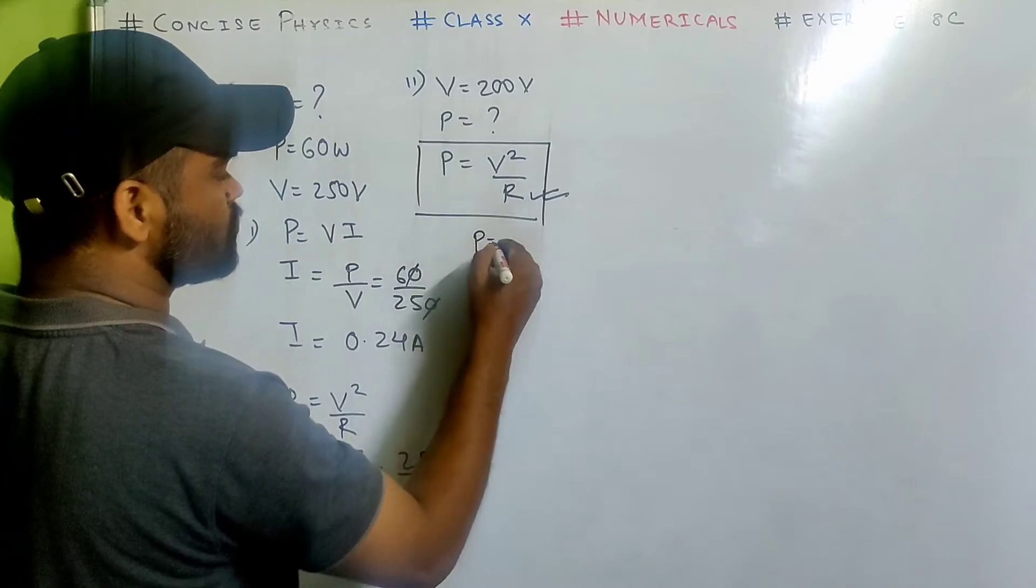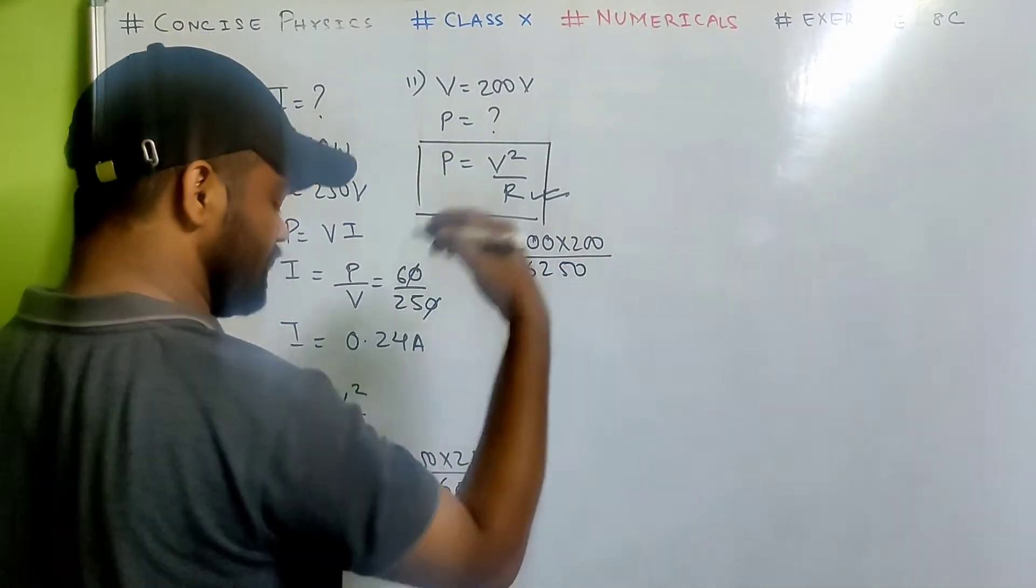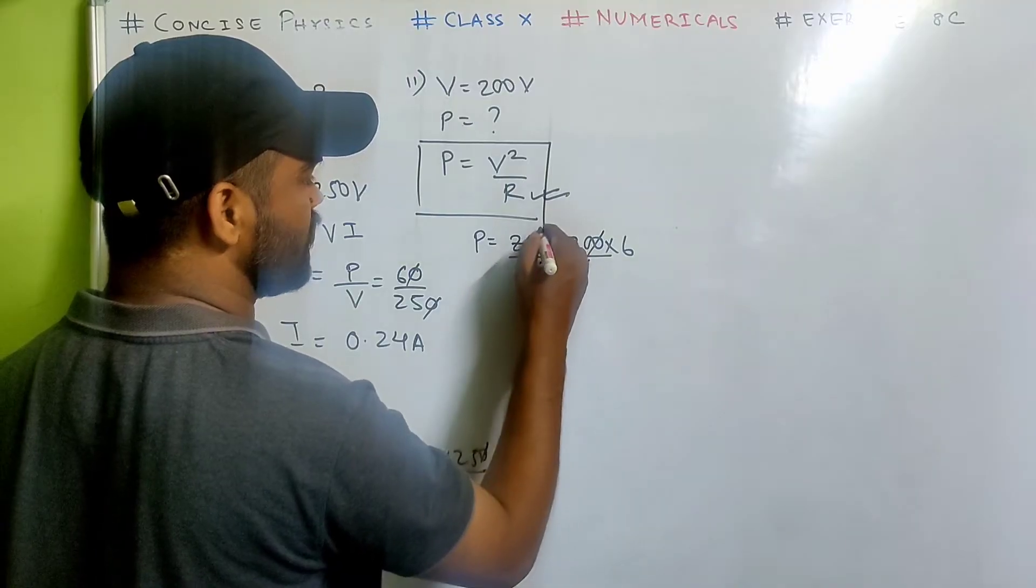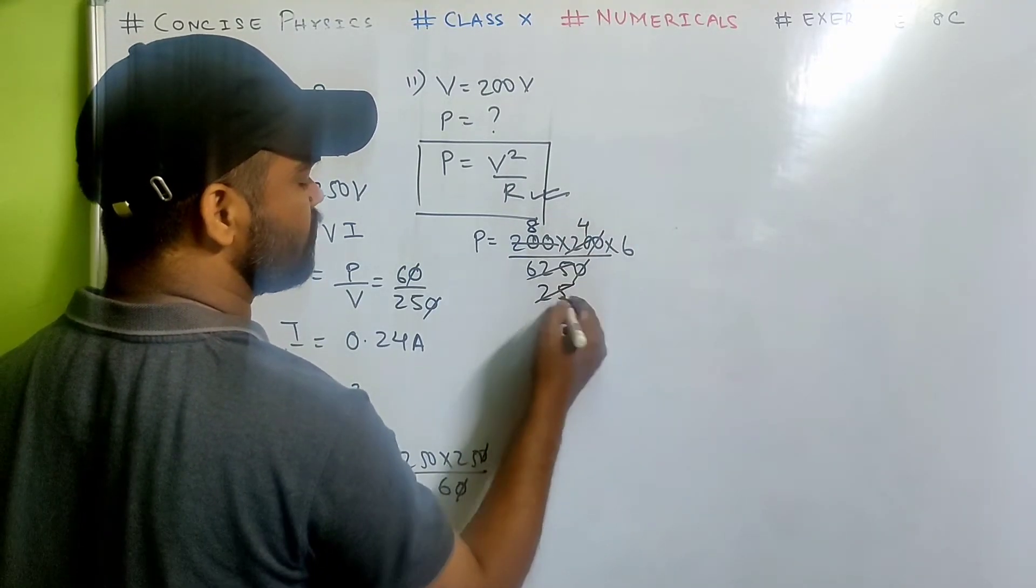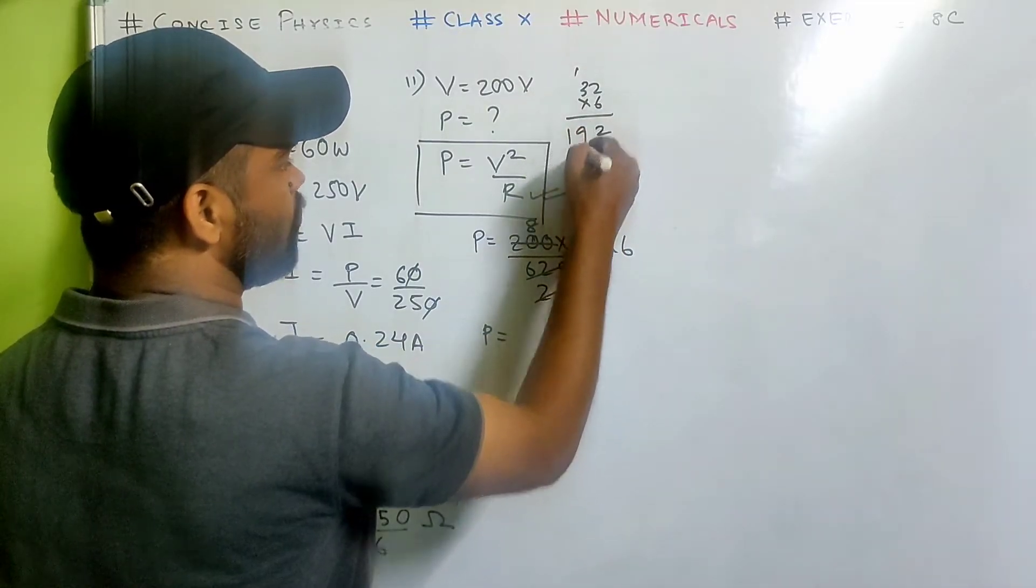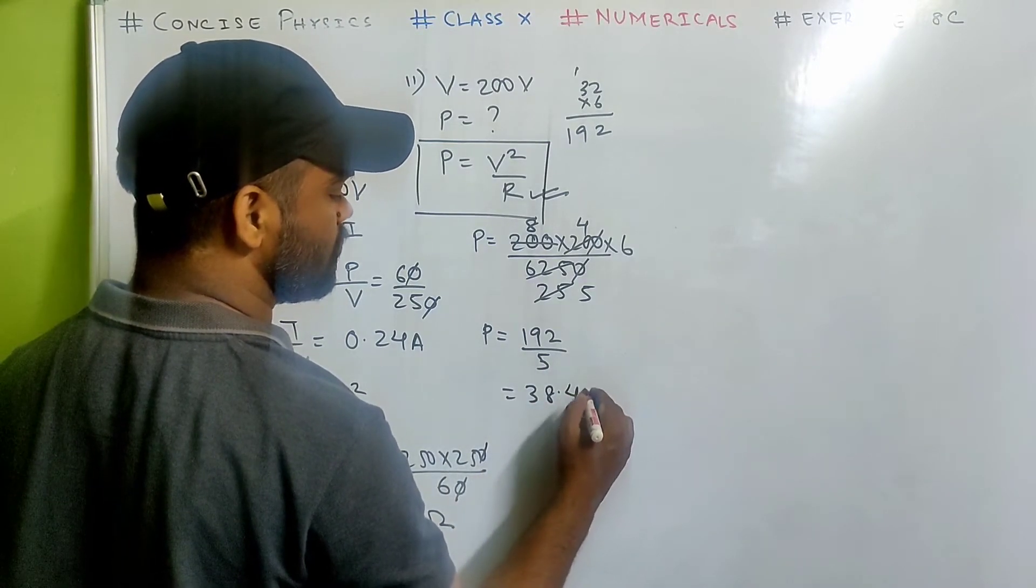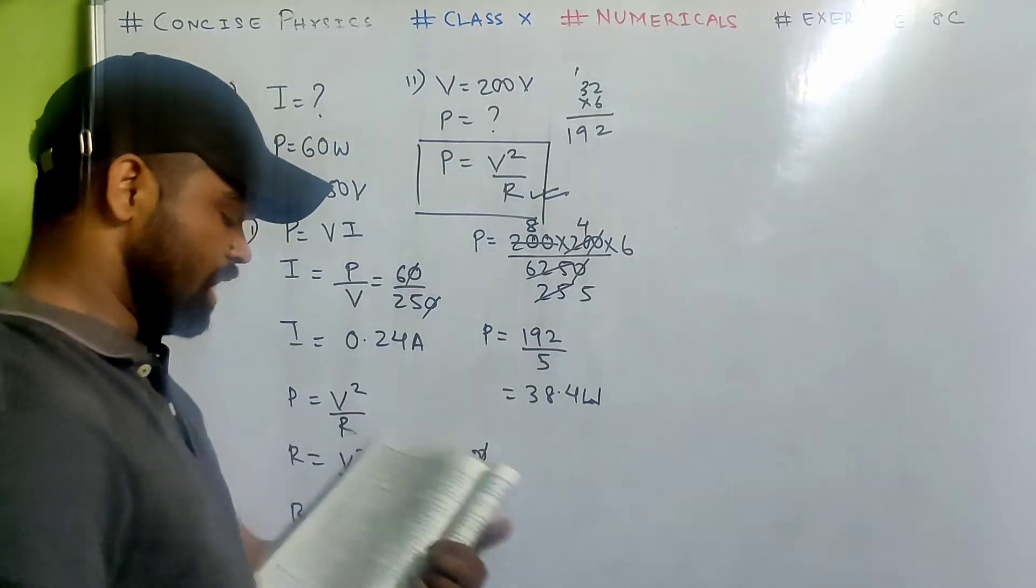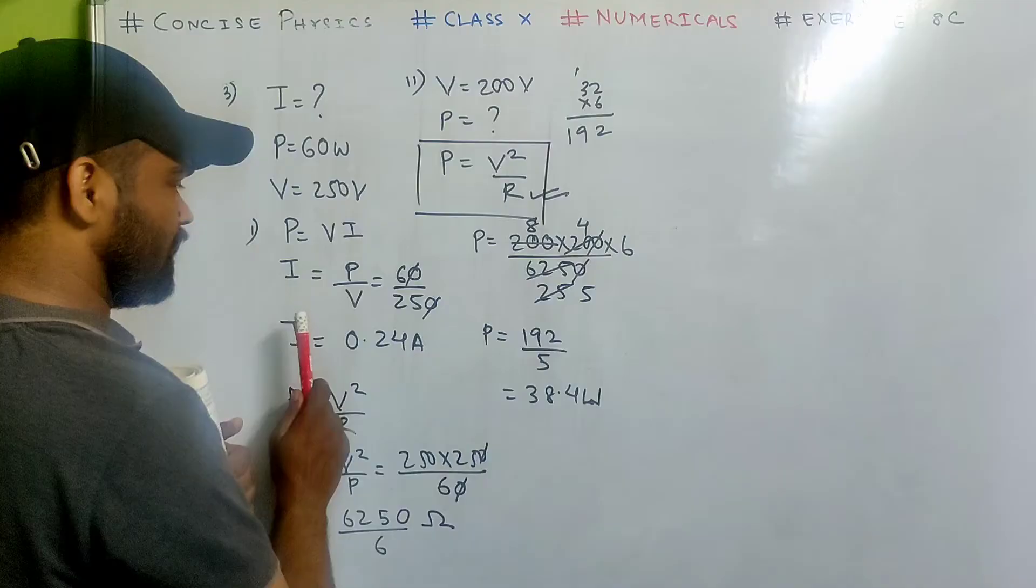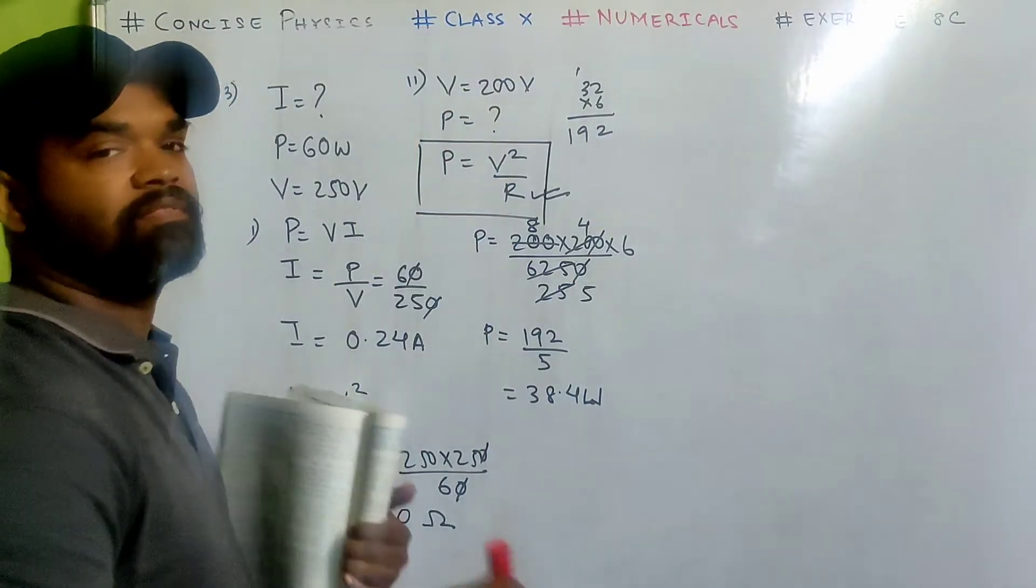Substitute over here. So power equals to v square by r, 200 multiplied by 200, r is 6250 by 6 which means 6 goes up. After solving, 25 times 8 times 6, p equals to 8, 4s are 32, 32 multiplied by 6, 192 by 5, so the power drops and becomes 38.4 watt. We calculated i with p equals to v i, we calculated r, then in the second case we calculated p using the formula v square by r.